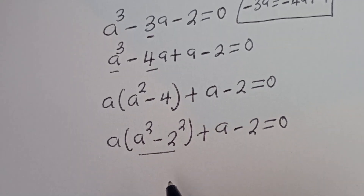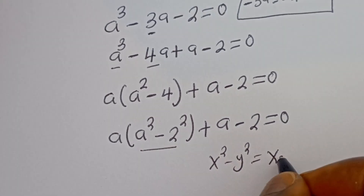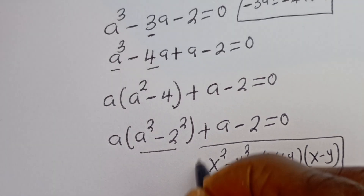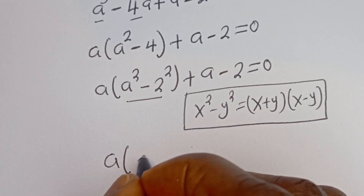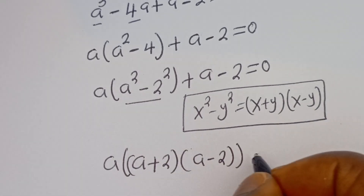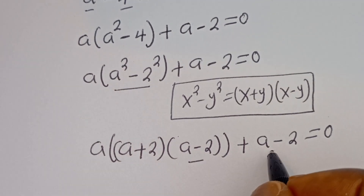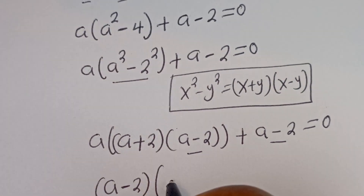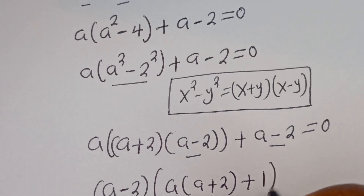If you look at this, this is in the form of a difference of squares. If you have A squared minus Y squared, this is equal to A plus Y bracket A minus Y. Then we have A bracket, which can be written as A plus 2 bracket A minus 2, plus A minus 2 is equal to 0. So from here, A minus 2 is common. Let's bring it out. We have A minus 2 bracket. If you divide this by this, we have A bracket A plus 2 plus 1. So A minus 2 bracket A squared plus 2A plus 1 is equal to 0.